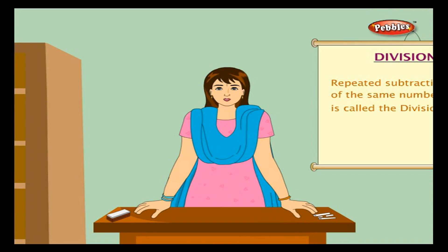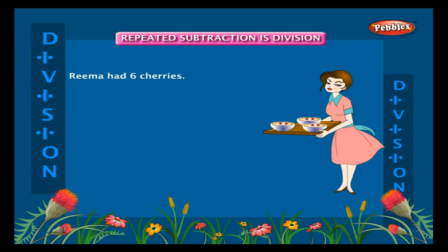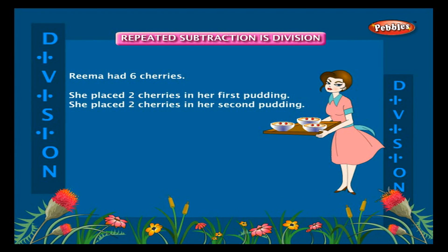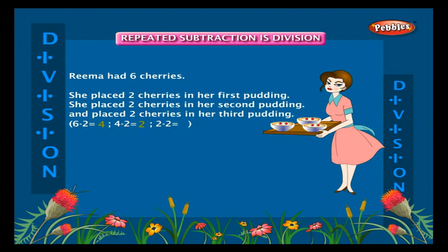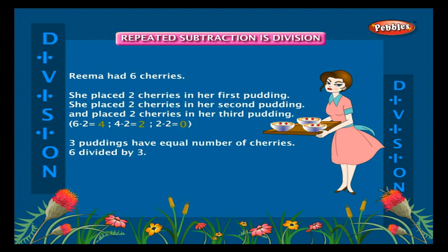Repeated subtraction of the same number is called division. Let us understand division through an example. Rima had six cherries. She placed two cherries in her first pudding, two cherries in her second pudding, and two cherries in her third pudding. So six minus two is four, four minus two is two, two minus two is zero. Three puddings have an equal number of cherries. Six divided by three is equal to two.